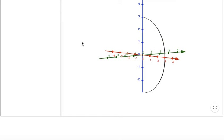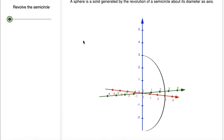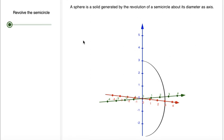Now look at this. This is nothing but a semicircle. That's the fact it says. A sphere is a solid generated by the revolving of a semicircle.